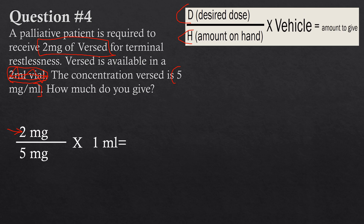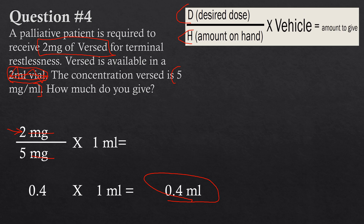So we do 2 milligrams divided by 5 milligrams — milligrams cancel — giving 0.4. We multiply 0.4 by one mL, and that gives us 0.4 milliliters. Identifying the vehicle is usually the toughest part to wrap your head around, but we'll have more questions going forward that will help guide you through this.